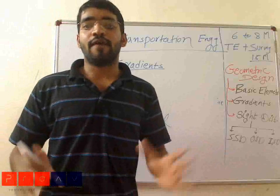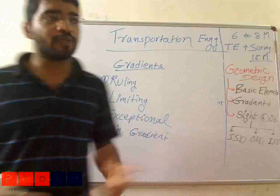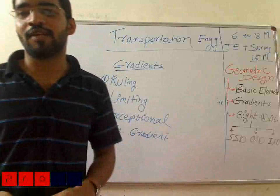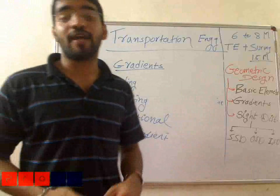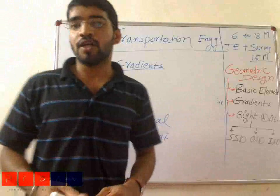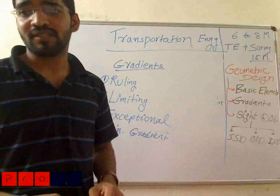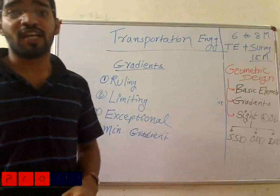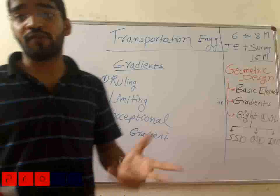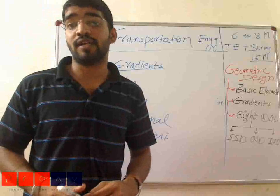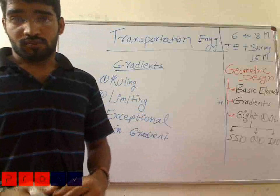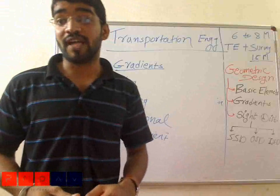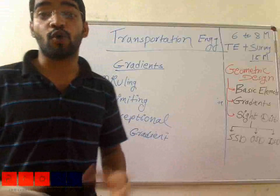Then we have a minimum gradient. It is defined on the basis of satisfactory road drainage requirements — generally about 0.5% or 1 in 200 for CC roads, and 1% or 1 in 100 for Kacha open drains.